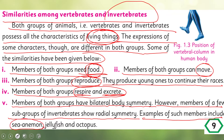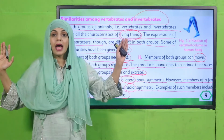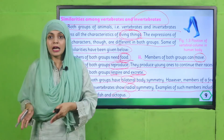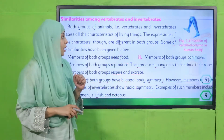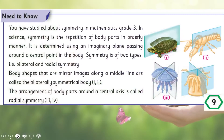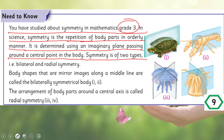Examples of invertebrates with radial symmetry include sea anemone, jellyfish, and octopus. All others have bilateral symmetry. Bilateral symmetry means the body can be divided into two equal halves — one hand on each side, two legs one on each side, like a mirror image. In science, symmetry is the repetition of body parts in an orderly manner, determined using an imaginary plane passing through a central point. Symmetry is of two types: bilateral and radial.